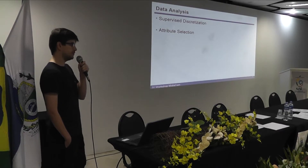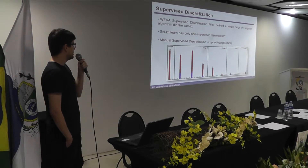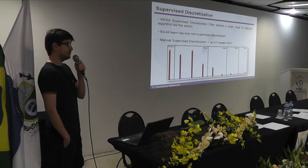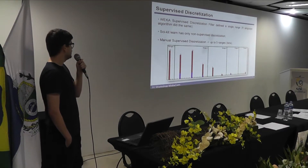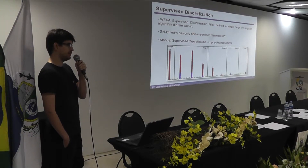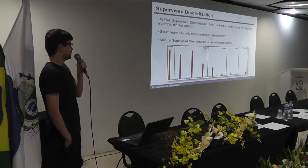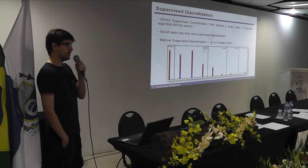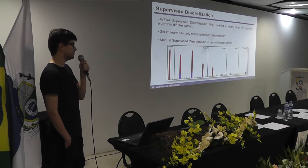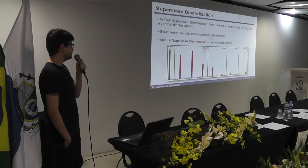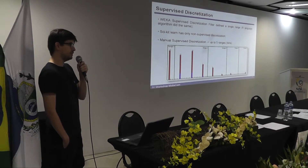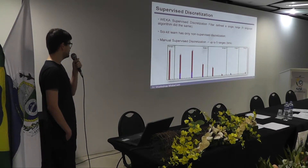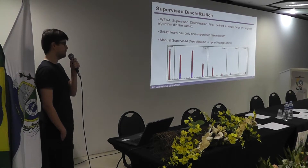I will now talk about the techniques used in our data analysis: supervised discretization and attribute selection. Supervised discretization transforms numeric data into nominal data by defining or generating ranges. We used the Weka machine learning software, but its supervised discretization filter defined just a single range. We also tried the ARPA algorithm, but it did the same for our dataset. The scikit-learn Python library has only non-supervised discretization. Since we want to take the class into account, we performed a manual supervised discretization using a criterion of up to five ranges.